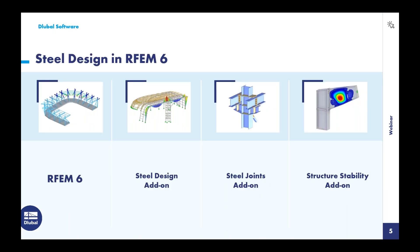For those not familiar with our programs: RFEM 6 is the base software, allowing us to fully model the global steel structure, load it, and integrate with BIM software for full analysis. To carry out member design according to the AISC, we need the Steel Design add-on — that was our focus last week in the first part of this two-part webinar series. Today we'll focus on the Steel Joints add-on, which allows connection design within that same RFEM model according to the AISC. I also mentioned the Structure Stability add-on, needed for eigenvalue analysis to determine buckling mode shapes, which we'll see in our example today.